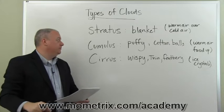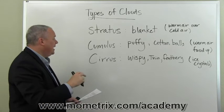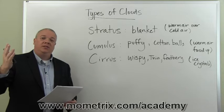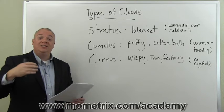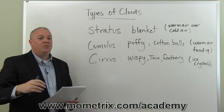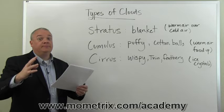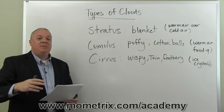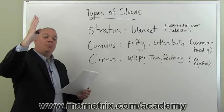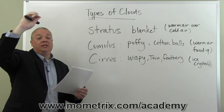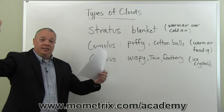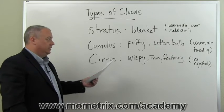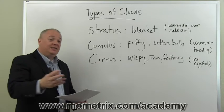Next are cumulus clouds — the ones I tend to think of when I look up and see different shapes and designs. Here we need to think: puffy. Puffy clouds, cotton balls. This is basically warm air that is forced upward, and as it goes upward it cools and condenses out into these big fluffy cotton ball-like mounds. Cumulus clouds.